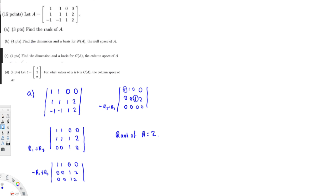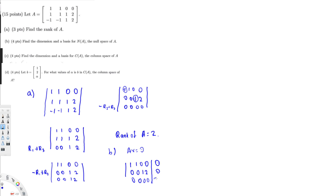The second question asks: find the dimension and basis for the null space of A. To do this I set AX equal to 0. I bring the row-reduced form and equalize to 0: 1 1 0 0 | 0 / 0 0 1 2 | 0 / 0 0 0 0 | 0.